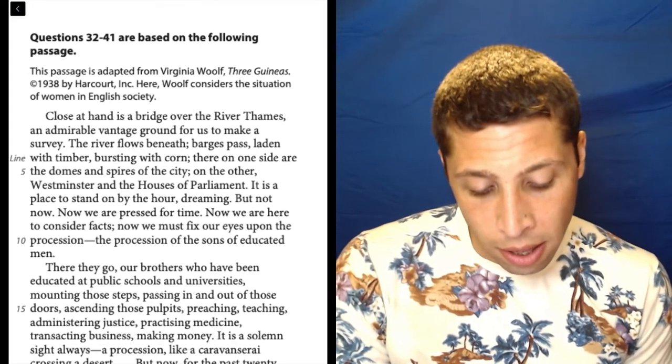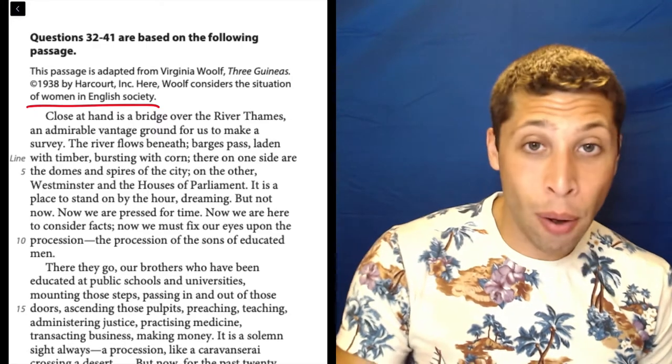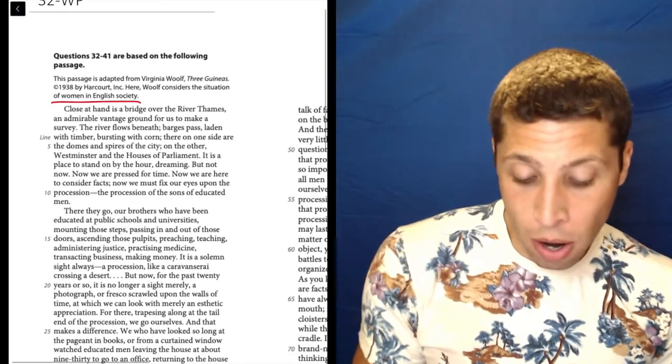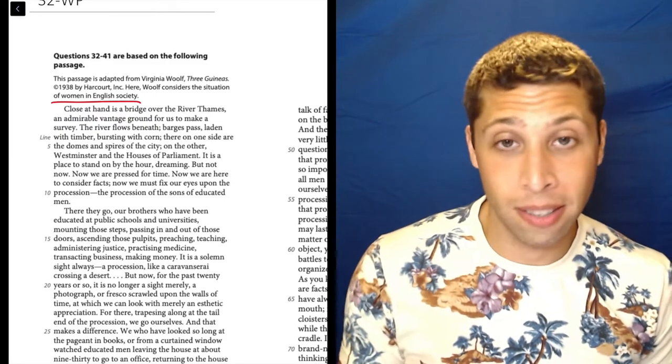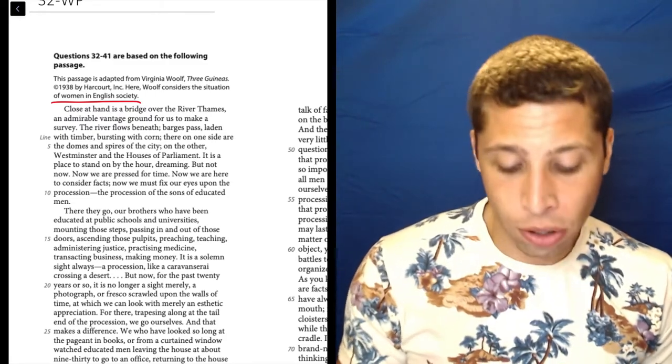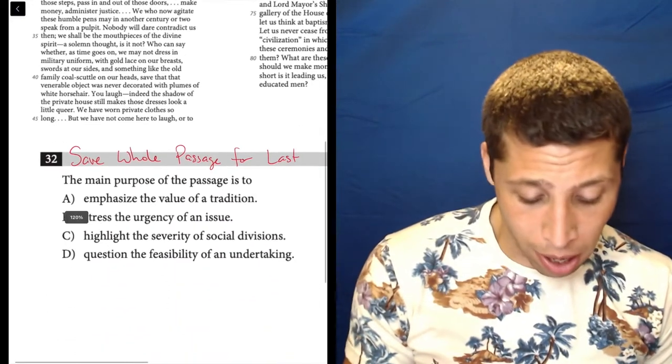So this passage is adapted from Virginia Woolf, Three Guineas, 1938 by Harcourt Incorporated. Here, Woolf considers the situation of women in English society. And by now I've read enough of the passage knowing that that's, yeah, of course what she's talking about. She's talking about women and women's role in society and how that is changing. And so, yeah, this fits with my own summary of what's going on.